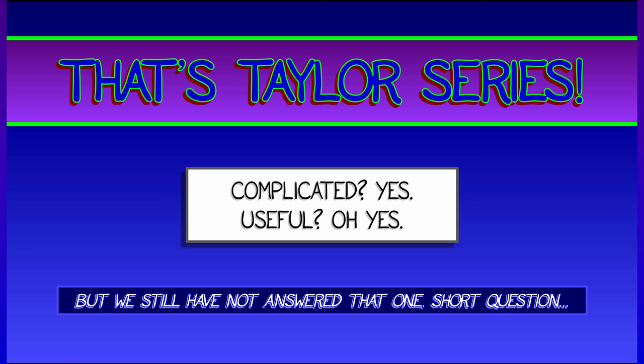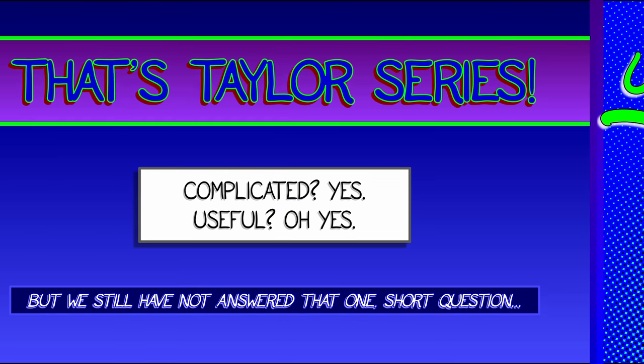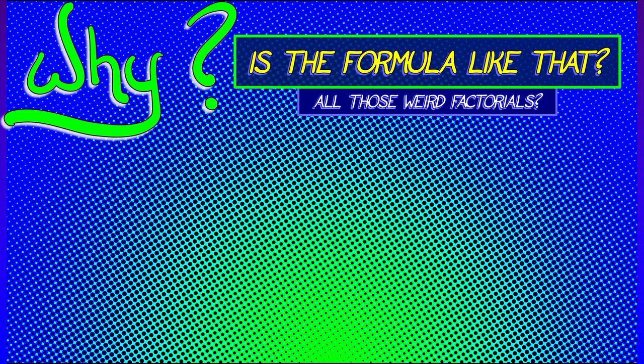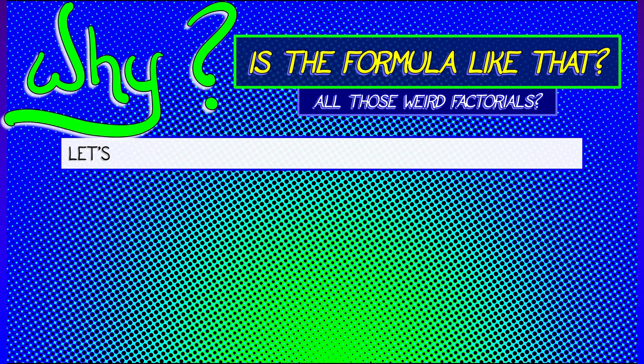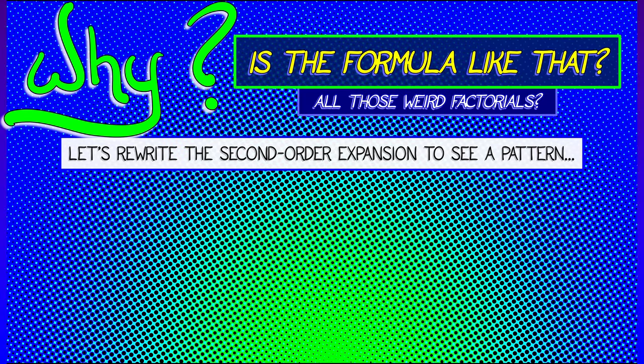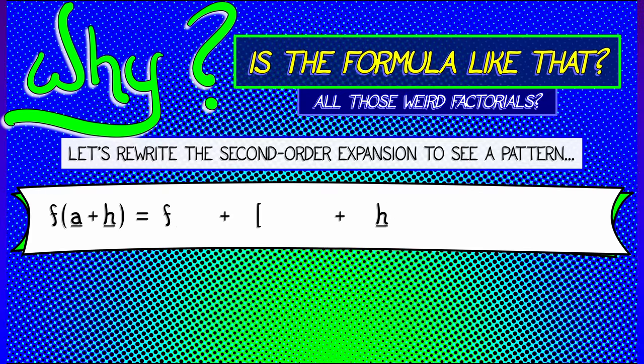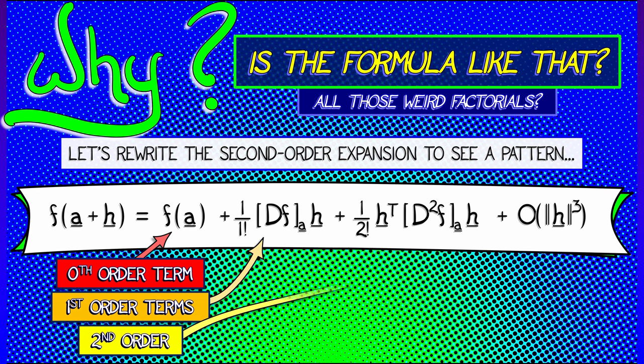But we still have not answered that one question. Why? Why does the formula for Taylor series look like that with all those complicated factorials, multi-index weirdness all over the place? Well, there's another way to write out the Taylor expansion that is going to look really familiar to you if we just do a second-order expansion.